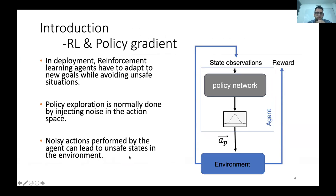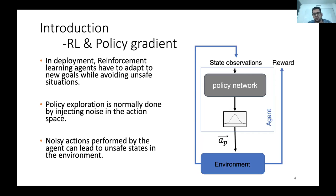What we are interested in is: if we allow agents to learn new things while being deployed in the real world, we would like these reinforcement learning agents to adapt to new goals while avoiding unsafe situations. If we train our robot in a simulator we don't care if it crashes into walls, but if we deploy it in the real world we would like it to avoid catastrophic collisions that might injure the robot, other people, or cause property damage.